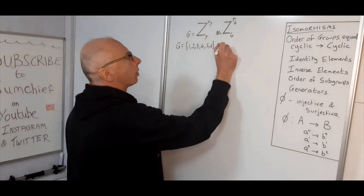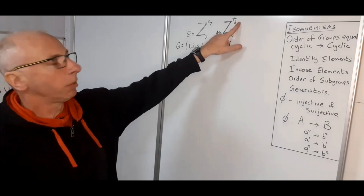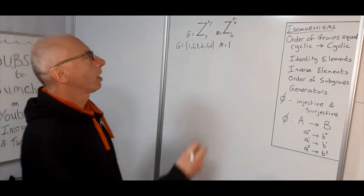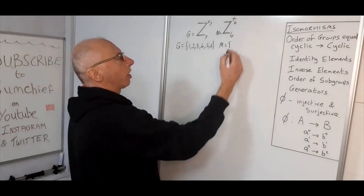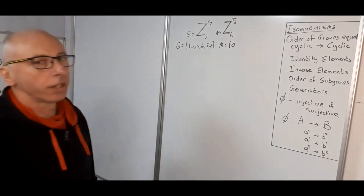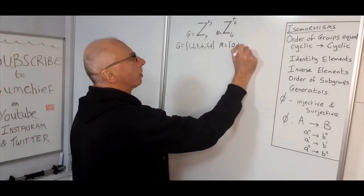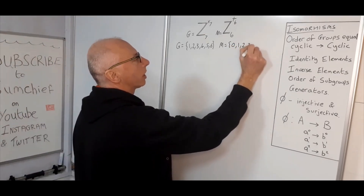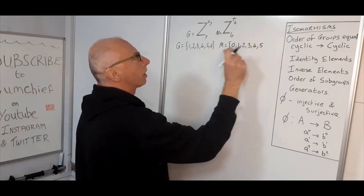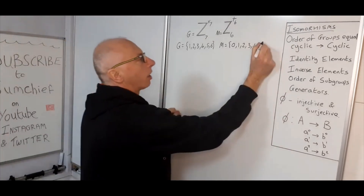Group M is under addition modulo six using the first six integers. Under addition the identity element is zero, followed by one, two, three, four, five — because here we're mod six. So that's our group M.